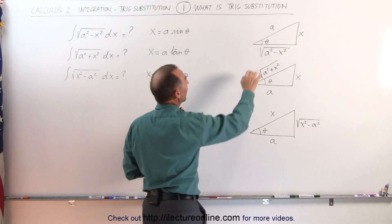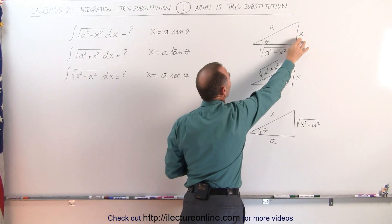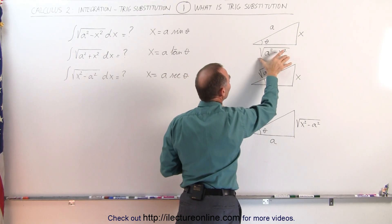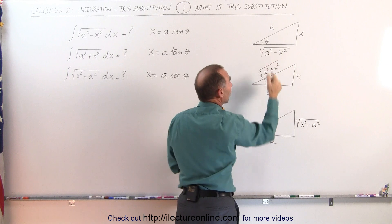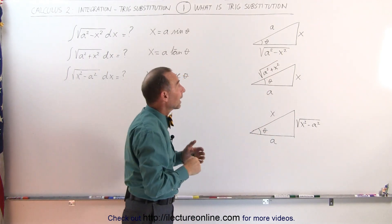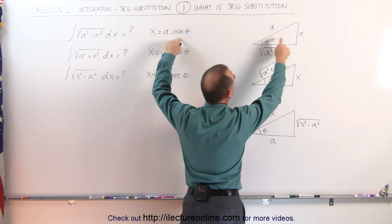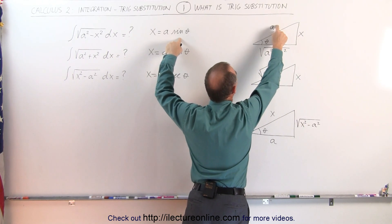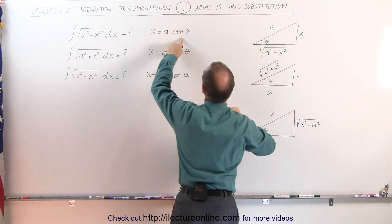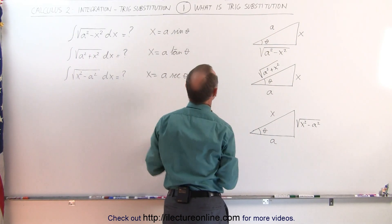On the first triangle, if we let a be the hypotenuse and x be the opposite side, then the adjacent side becomes the square root of a squared minus x squared, that is from the Pythagorean theorem. Notice that the sine of theta is defined as the opposite side over the hypotenuse, which is x over a, so therefore x divided by a becomes the sine of theta.